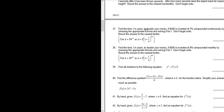Number 37: Find the time t in years to double your money if $500 is invested at 7% compounded continuously by choosing the appropriate formula and solving it for t. Don't forget units.